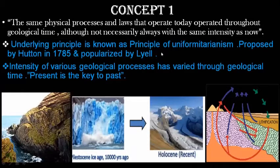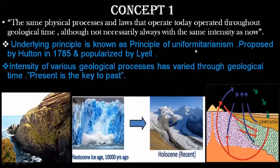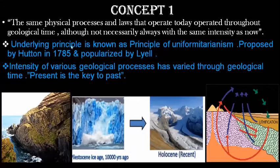This concept — that what is the same today was also the same previously — is called the principle of uniformitarianism. Hutton in 1785 proposed this principle, which was later popularized. It means the assumption that the same natural laws and processes that operate today in the present day also operated in the universe in the past, and can be applied everywhere.